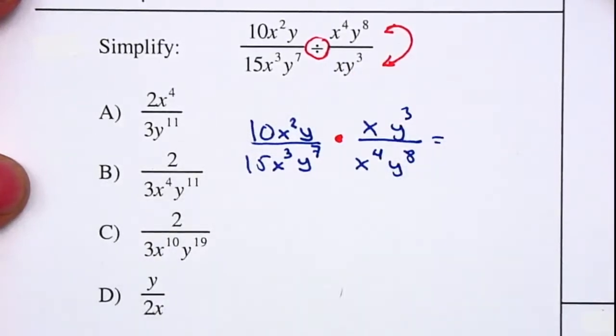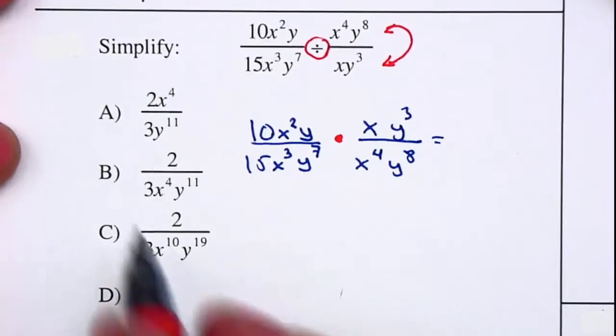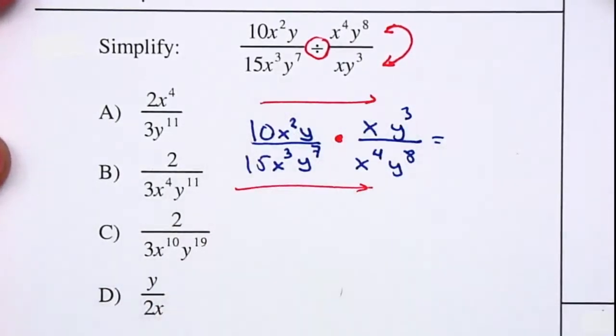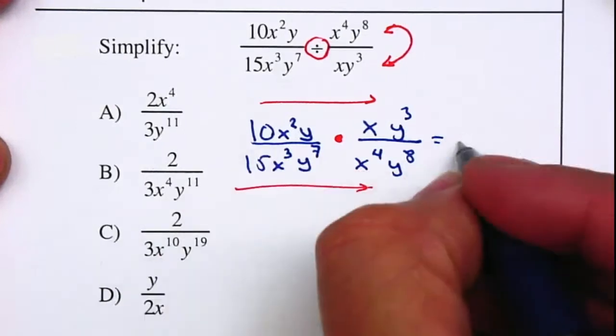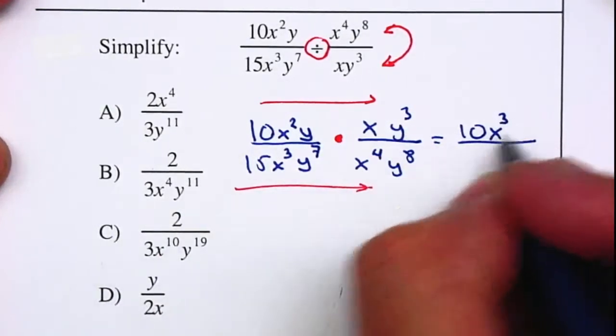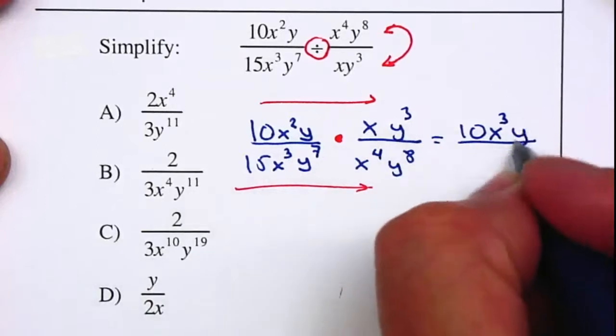And now that we have a multiplication, we can just multiply across. Notice that there are no pluses or minuses, so that will allow us to just multiply across. Simple multiplication. So we have a 10. x² and x, which gives me x to the third. y and y to the third gives me y to the fourth.